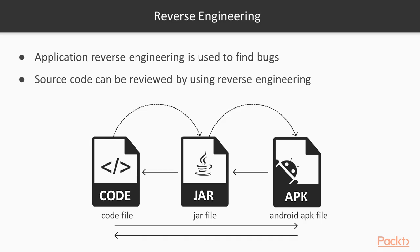The JAR file is then converted into the code files where I can check all the code available inside the app. This is called reverse engineering. It is just the reverse of the process — originally it was the source code, then it was converted into the JAR file, and then into the APK file for Android. Reverse engineering means reversing all of that: the APK file is converted back into the JAR file, and the JAR file is converted into the source code files.